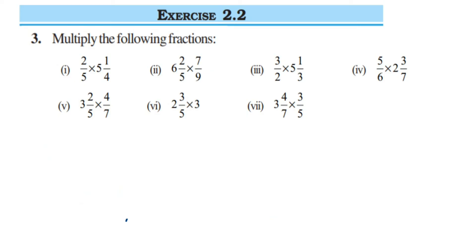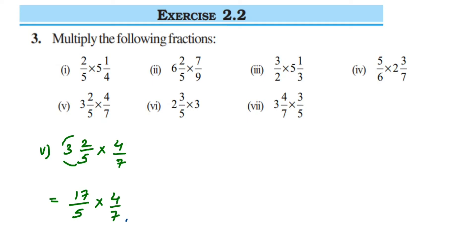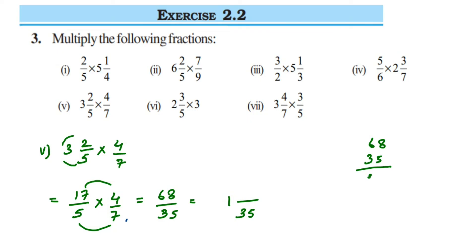Fifth sub-question: 3⅖ multiplied by 4/7. Convert the mixed fraction: 3 times 5 is 15, plus 2 is 17, so 17/5 multiplied by 4/7. We cannot cancel any numbers, so multiply: 17 times 4 is 68, and 5 times 7 is 35, giving 68/35. Converting to a mixed fraction: 35 ones are 35, and 68 minus 35 is 33, so the answer is 1 33/35.